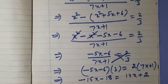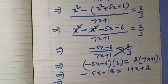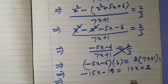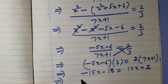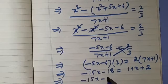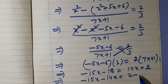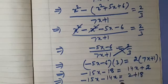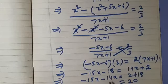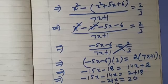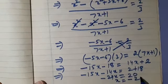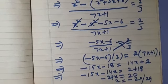Transposing constants and variables to one side: 14x is brought to the left hand side, so it becomes minus 14x. Minus 18 when transposed becomes plus 18, so 2 plus 18 is 20. Minus 15x minus 14x is minus 29x. So x comes out to be minus 20 upon 29.